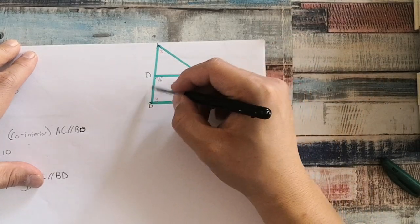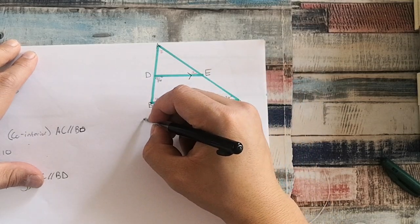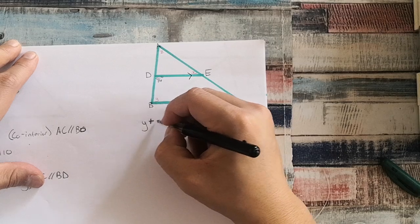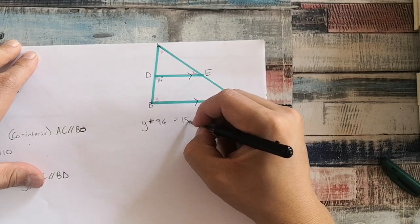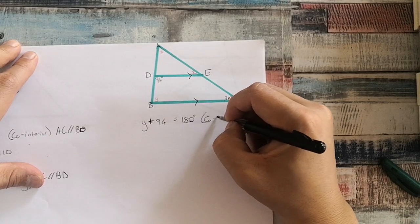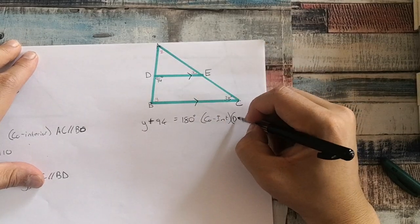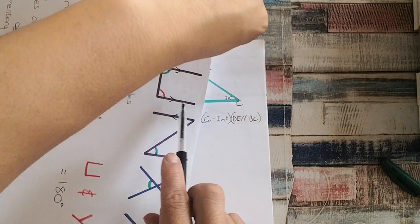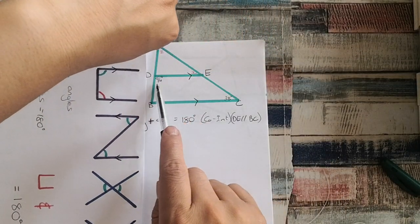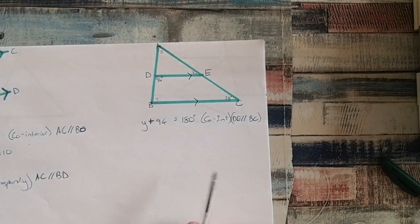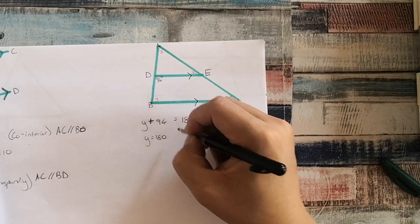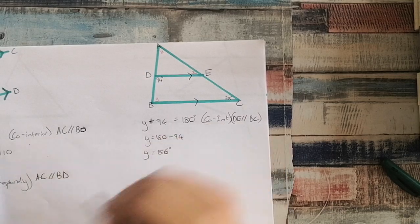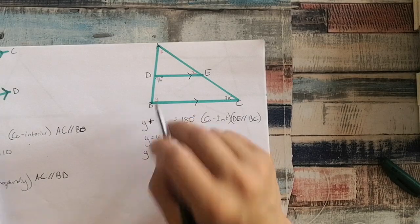I can already see there is a U here. So I'm going to say Y plus 94 — which is this one over here — is equal to 180 degrees. Why? Because of co-interior angles, and because DE is parallel to BC. So you can see there is my U. Remember your U — just placed sideways. That angle plus that angle must equal 180. So Y is equal to 180 minus 94 degrees. Therefore, Y is equal to 86 degrees.